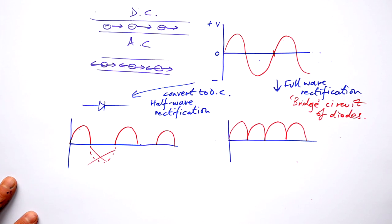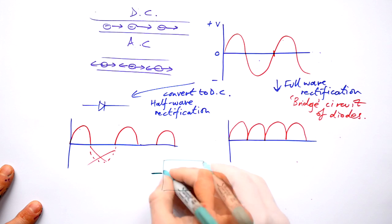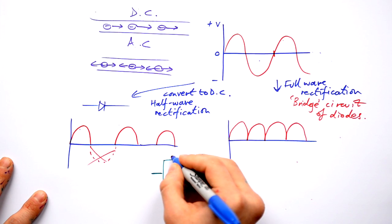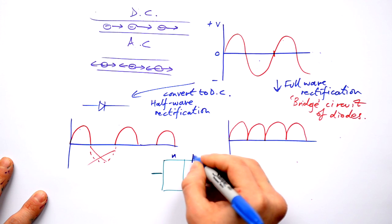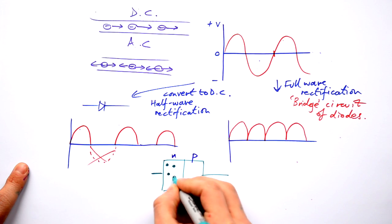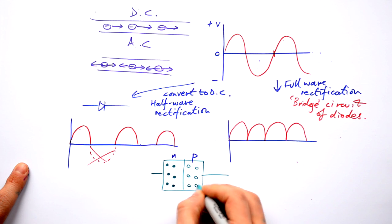You can smooth this out using capacitors. Just very quickly, the way that a diode works, it's a tale of two halves. What we have is a negative part to our diode and a positive part to our diode. The negative part has electrons in, and the positive part has holes where electrons can fill.